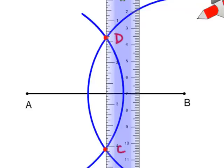That line will be the perpendicular bisector.